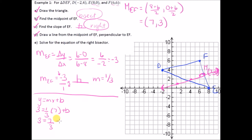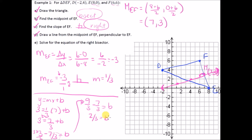3 = 7/3 + b. Move that over: 3 − 7/3 = b. We need a common denominator of 3, so multiply 3 by 3/3 to get 9/3. Then 9/3 − 7/3 gives b = 2/3. If we look at the y-intercept on the graph, it is indeed 2/3. Therefore the equation of the right bisector is y = (1/3)x + 2/3.